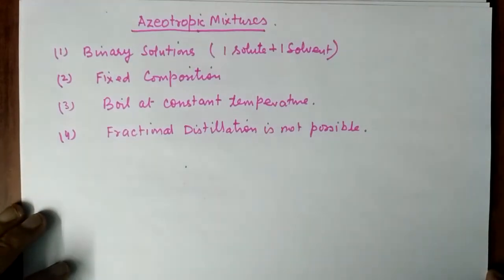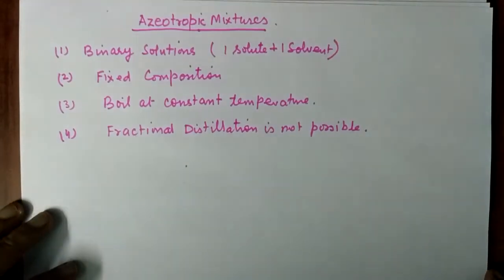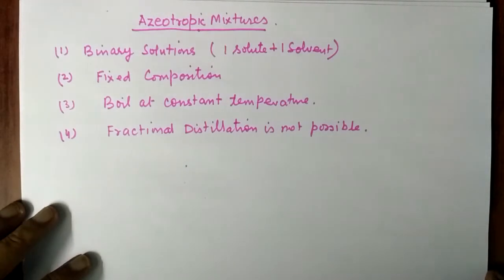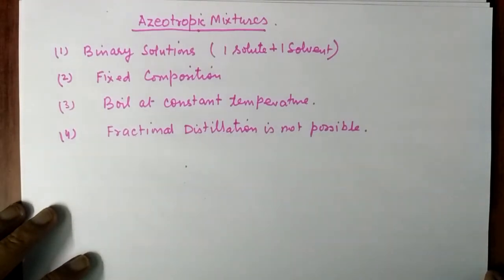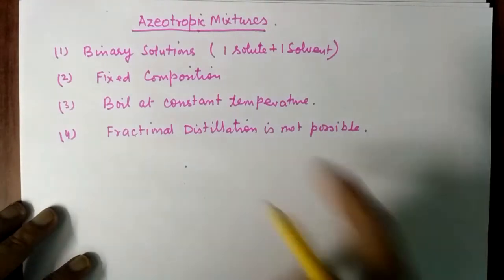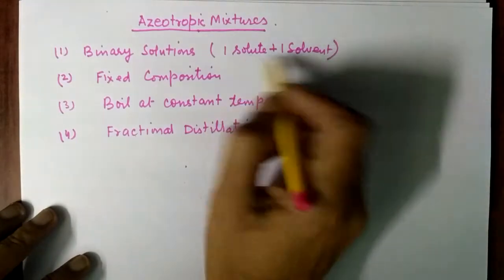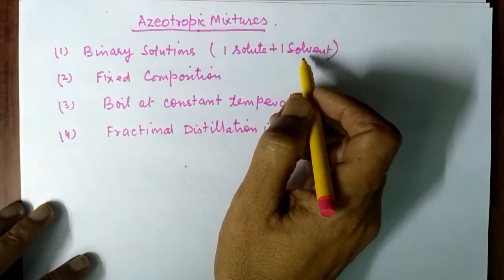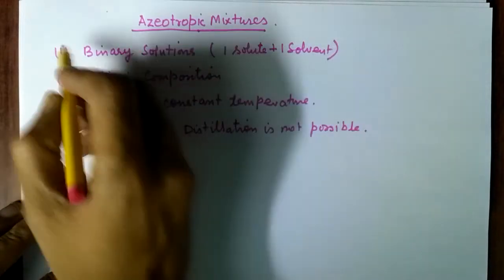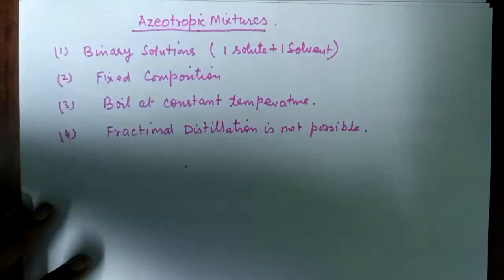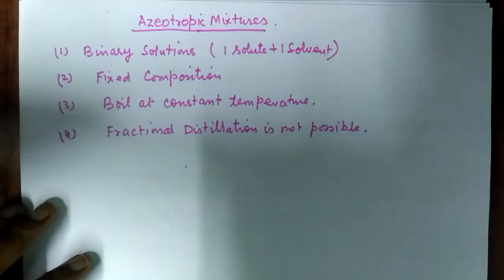Hello viewers. In this class we will study about azeotropic mixtures. What are azeotropic mixtures? These are the solutions of one solute and one solvent, which means they are binary solutions.